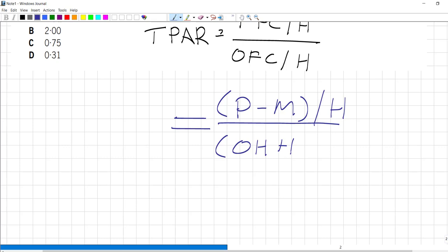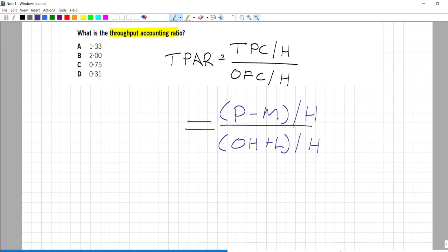So very important to make a shopping list before you go into that big question, just like you make a shopping list before you go to the supermarket. I found the variables I need: one, two, three, four, five, six. So I am going shopping for six variables: the selling price, the direct material cost, hours on the bottleneck, the overheads, cost of labor, and the total bottleneck hours in the period.